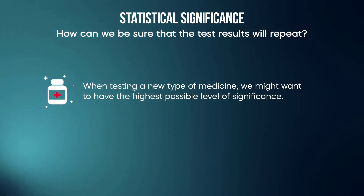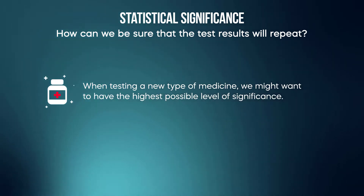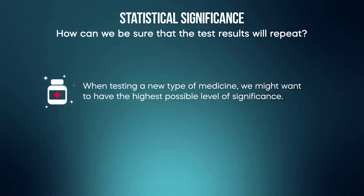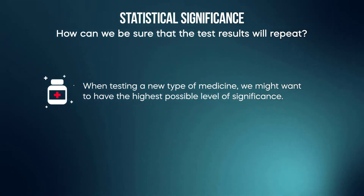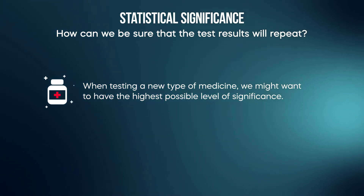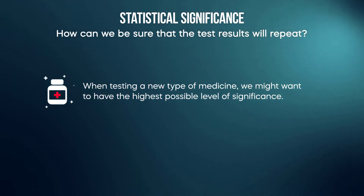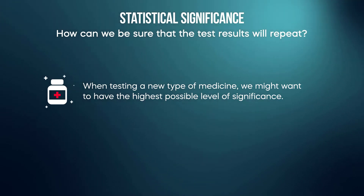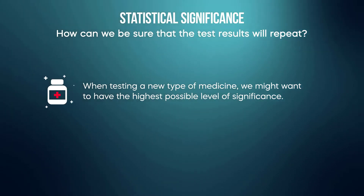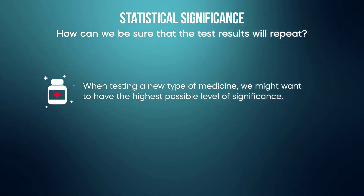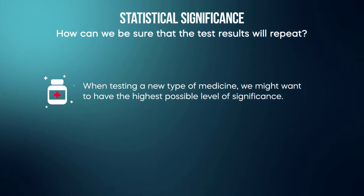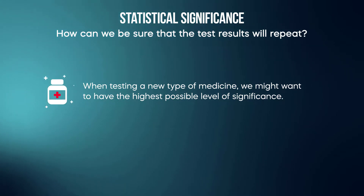When testing a new type of medicine, however, we might want the highest possible level of significance — for example, 1 percent or even 0.1 percent. It is very important in those cases to have the lowest possible number of false positives, because someone's life depends on it.